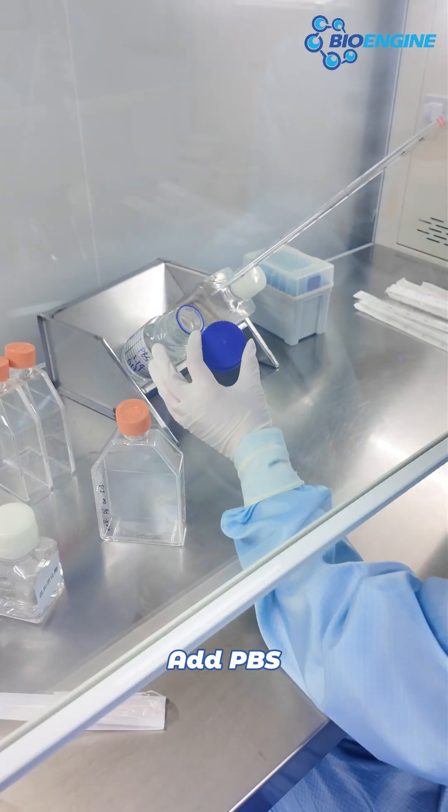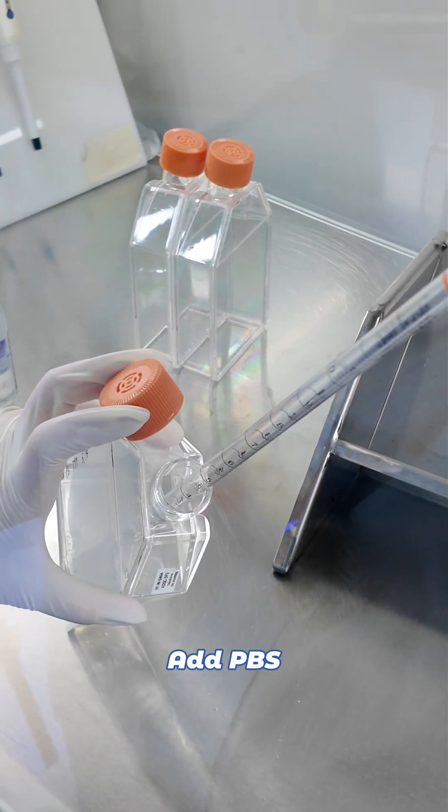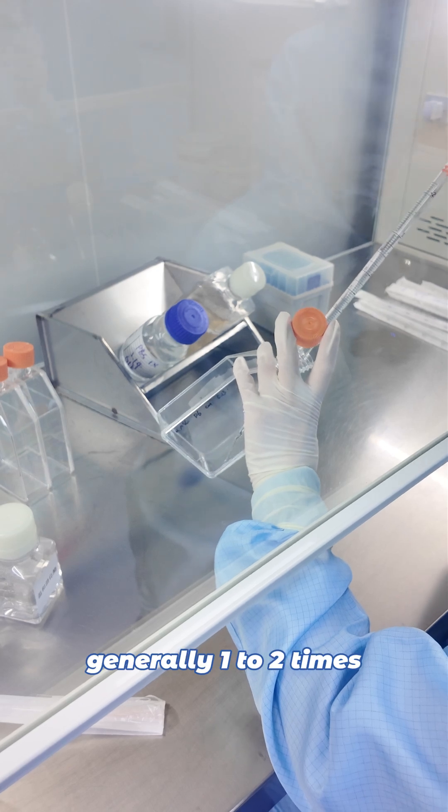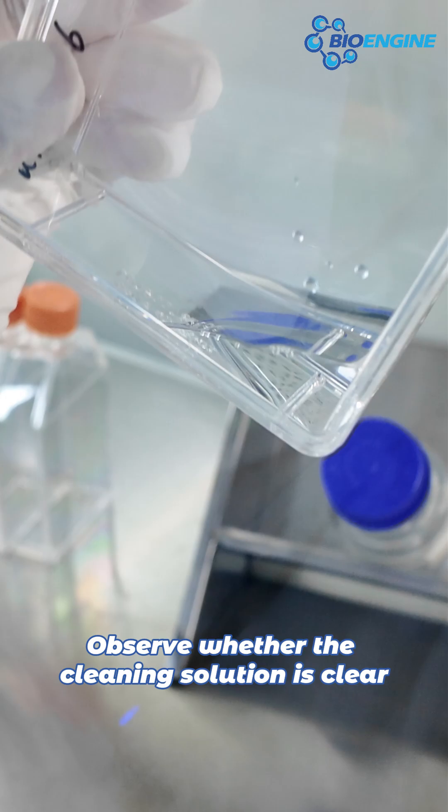Add PBS. Gently shake the flask to wash the cell layer, generally one to two times. Observe whether the cleaning solution is clear.